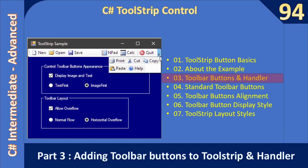Hello friends, welcome to C# intermediate to advanced tutorial. You are watching part 3 of the video: toolbar buttons and handlers. In this example we are going to create three toolbar buttons — Notepad, Calculator, and Quit. By default these buttons appear towards the left of the ToolStrip control.